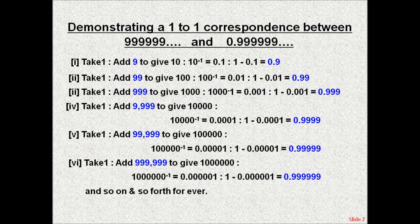The following calculation steps demonstrate that there is a 1 to 1 correspondence between the infinite expansion of nines and the infinite fraction. Take 1, add 9 to give 10. Take the reciprocal to give 0.1. Subtract from 1 equals 0.9. Take 1, add 99 to give 100. Take the reciprocal of 100 equals 0.01. 1 minus 0.01 equals 0.99 and so on and so forth.